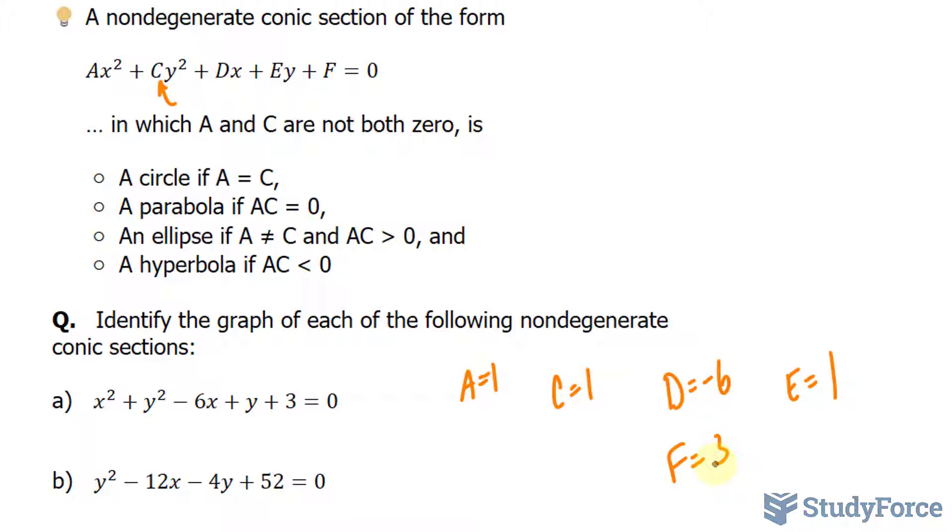Now we're told that if A equals C, it's a circle, and that's the case for question A. So without completing the square, I know this will give us a circle.